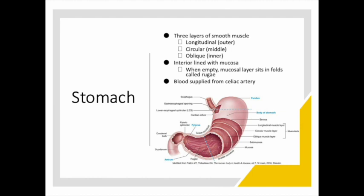A few substances can actually be absorbed in the stomach — alcohol and aspirin — because they are lipid soluble. The stomach mucosa is impermeable to water. The stomach's blood supply comes from a branch of the celiac artery and is so abundant that nearly all arterial vessels would need to be blocked before any ischemic changes occur in the stomach wall. We also have a series of small veins that drain blood from the stomach and move it toward the hepatic portal vein.